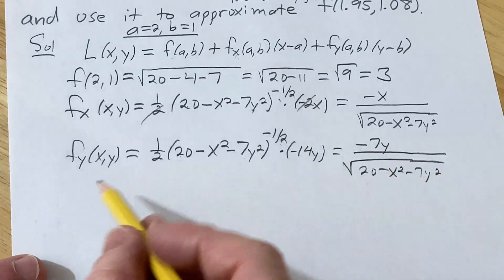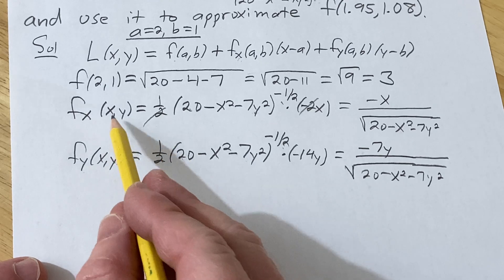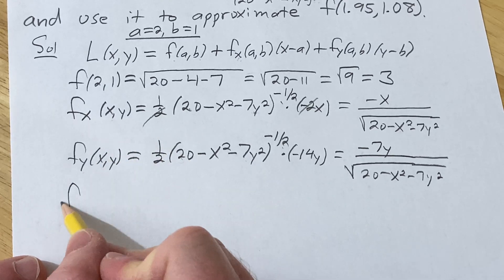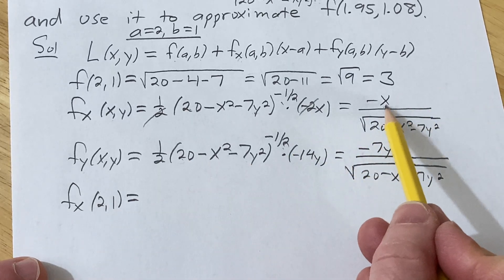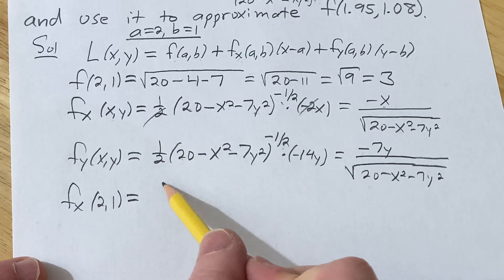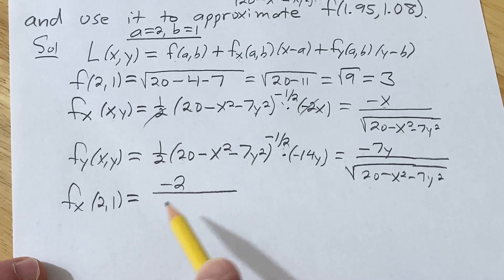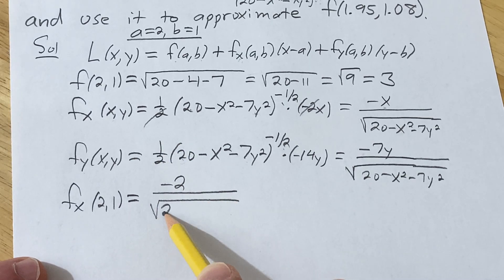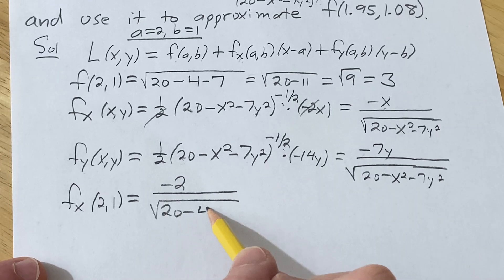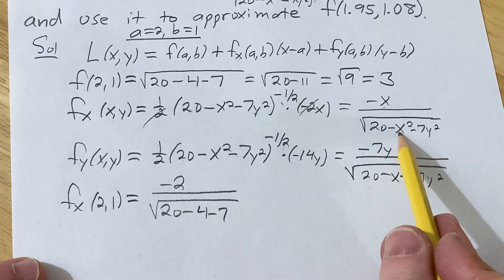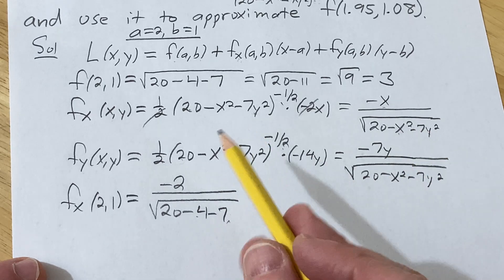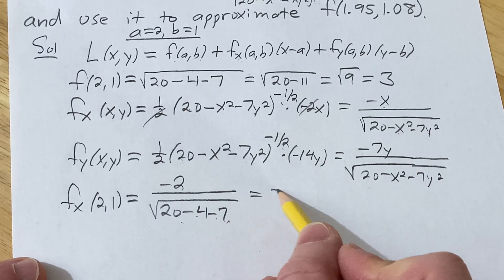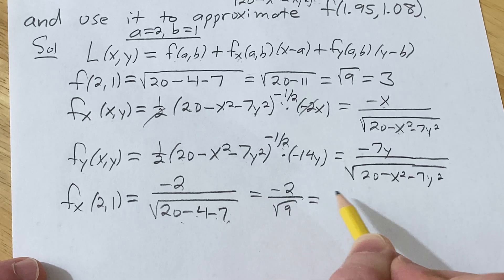All right, let's keep going. We're almost there. So now we're just going to plug in the point (2,1) into these derivatives. So fx at (2,1). We have to be careful here. So x is 2, so it'll be -2 over square root (20 - 4 - 7). Just like before, 2 squared is 4, y squared is 1, so you get 7 times 1, so you get 7. 20 minus 11 is 9, square root of 9 is 3.